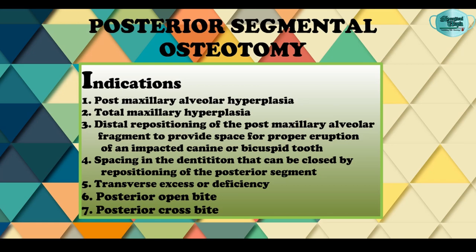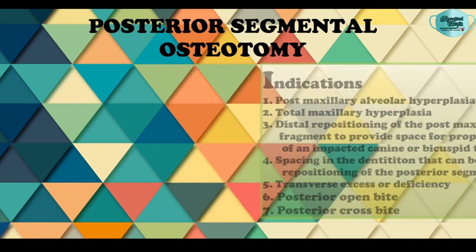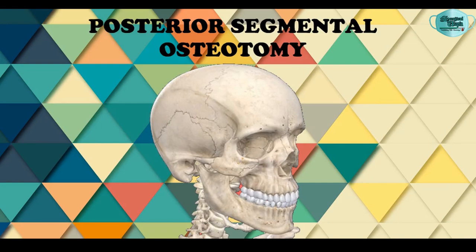Posterior segmental osteotomy is also indicated where distal repositioning of the posterior maxillary alveolar fragment is needed to provide space for proper eruption of an impacted canine or premolar tooth, in cases where spacing in the dentition can be closed by repositioning the posterior segment, and in cases of transverse excess or transverse deficiency, posterior open bite, and posterior crossbite.